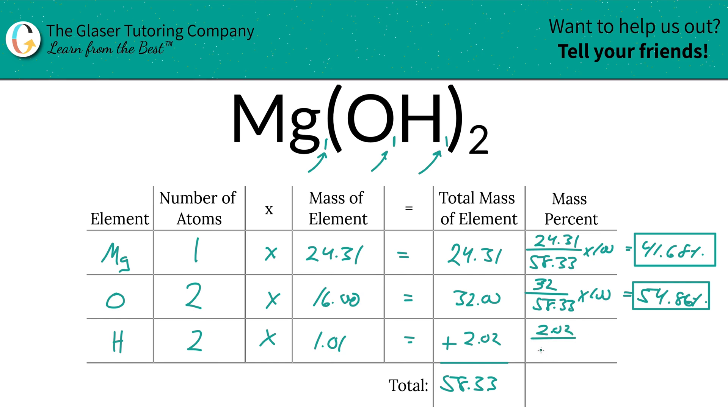Then we're going to do the same thing for hydrogen. Take the total of hydrogen, divide it by the total mass of the entire compound—by now you're probably identifying patterns, which is going to be great—and this is going to be 3.46 percent.